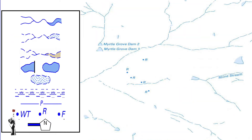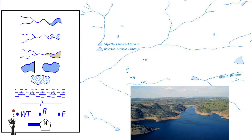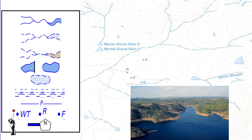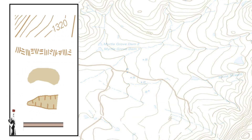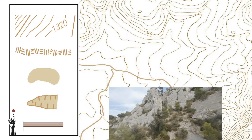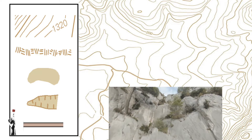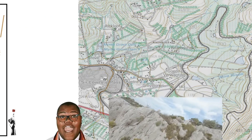Blue represents everything that has to do with water — all water bodies, rivers, dams, and lakes will be represented by blue. And finally, brown. The lines on the map are brown — brown represents contour lines, and contour lines help us to quantify elevation. Put together, you have loads of information.